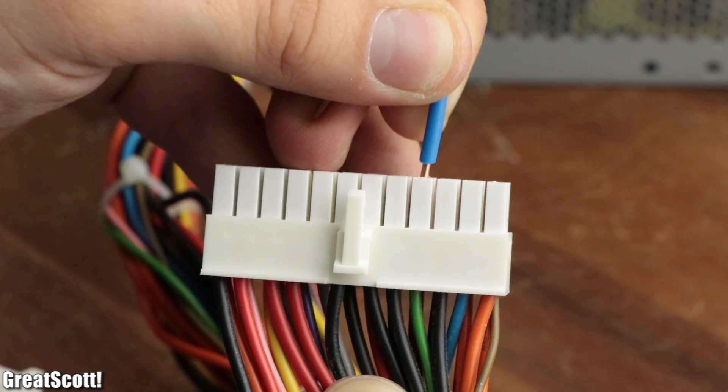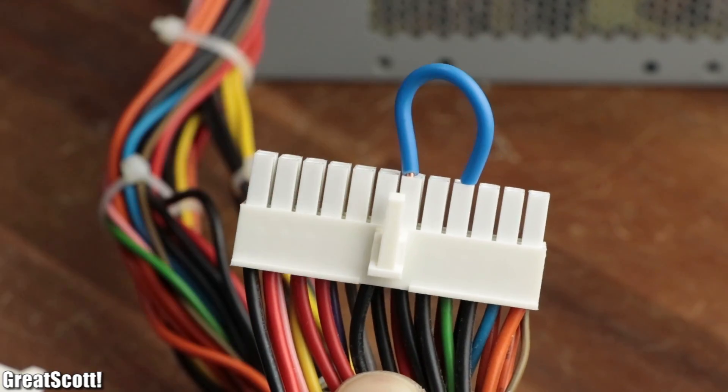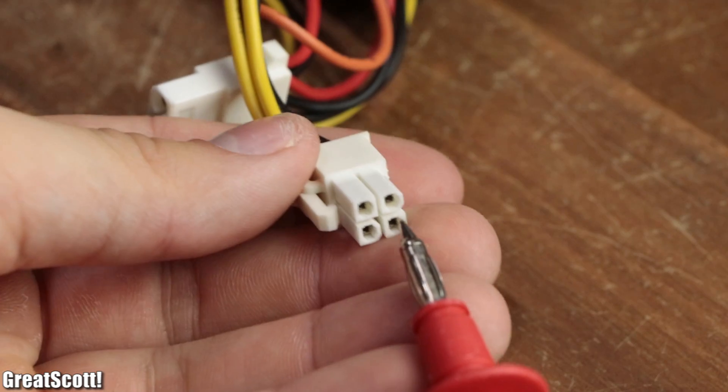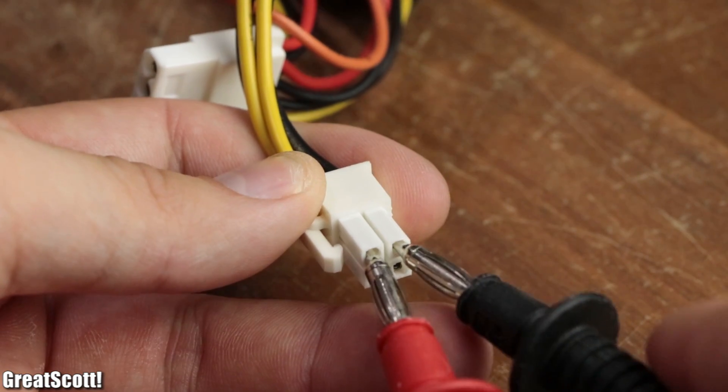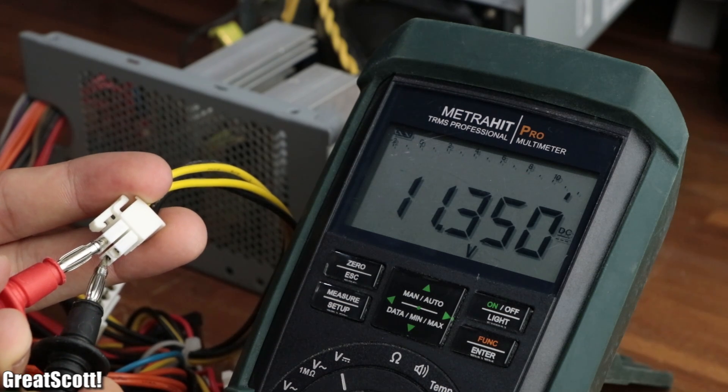Now, we can check this output voltage by connecting the green wire of our supply with a black wire, plugging in the power and measuring the voltage between a yellow and black wire. As you can see, the voltage is around 11.35 volts.